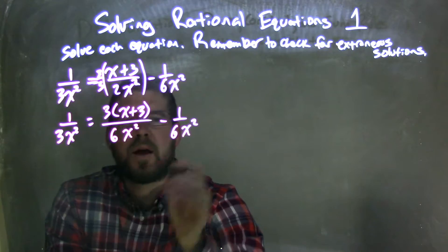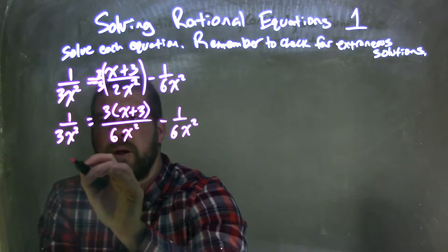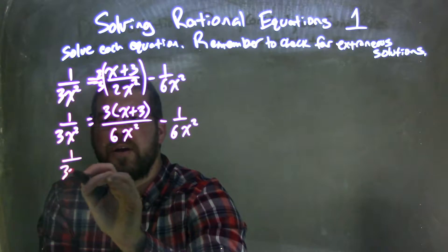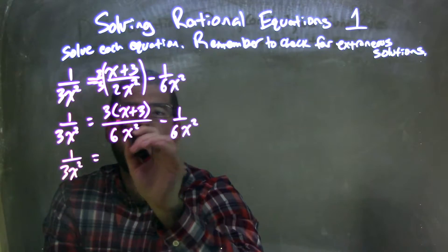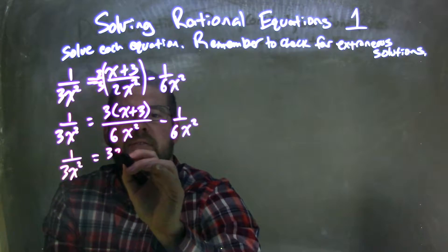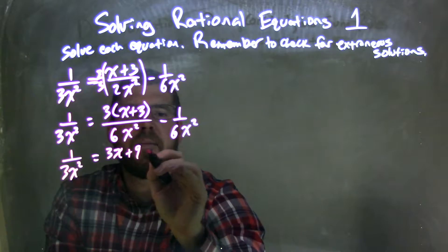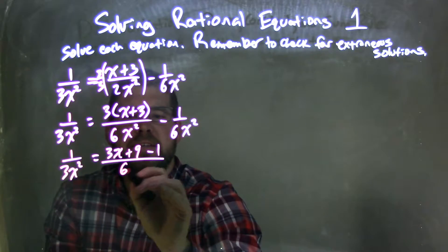Now, what I can do is combine these two here. I have 1 over 3x squared on the left equals—I'll distribute up top—3x plus 9 minus 1 over 6x squared.